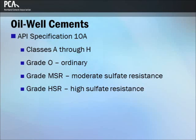Oil well cements are used for oil well grouting. They are usually made from Portland cement clinker or from blended hydraulic cement. The American Petroleum Institute's specification 10A includes requirements for eight classes, A through H. Each class is applicable for use at a certain range of well depth, temperatures, pressures, and sulfate environments. There are also three grades: ordinary, moderate sulfate resistance, and high sulfate resistance.